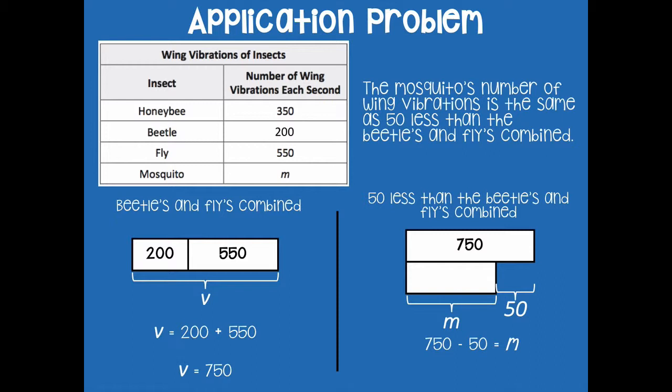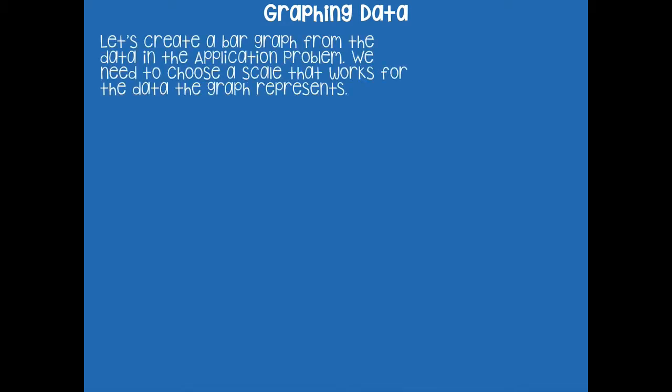750 minus 50 equals 700, so the mosquito's wing vibrations are 700 each second. Wow, that blows my mind — they can have 700 vibrations in one second! Okay, so now we're going to take all that data we just collected and graph it.